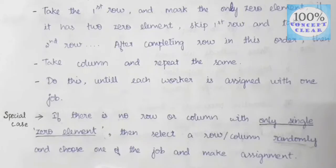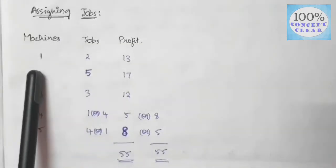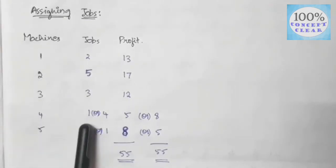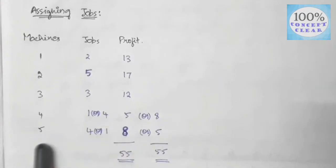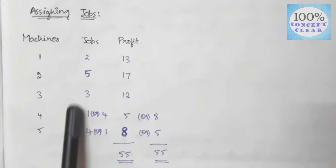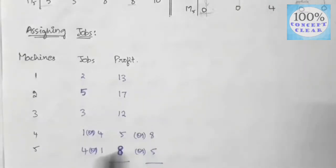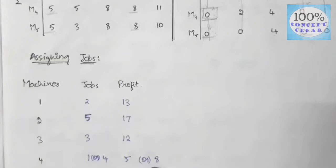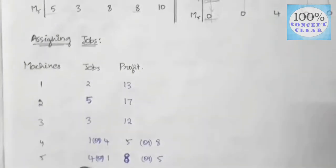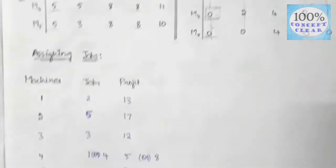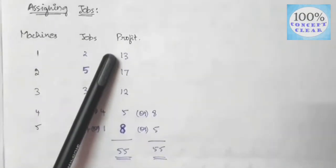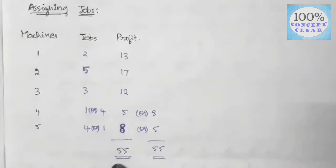We follow these steps to complete the assignment. Machine 1 is assigned job 2. Machine 2 is assigned job 5. Machine 3 is assigned job 3. Machine 4 is assigned job 4. Machine 5 is assigned job 1 or job 4 depending on the random choice. The total profit is 13 plus 17 plus 12 plus 5 plus 8, which equals 55. If we assign any job randomly, there are no changes in total profit.